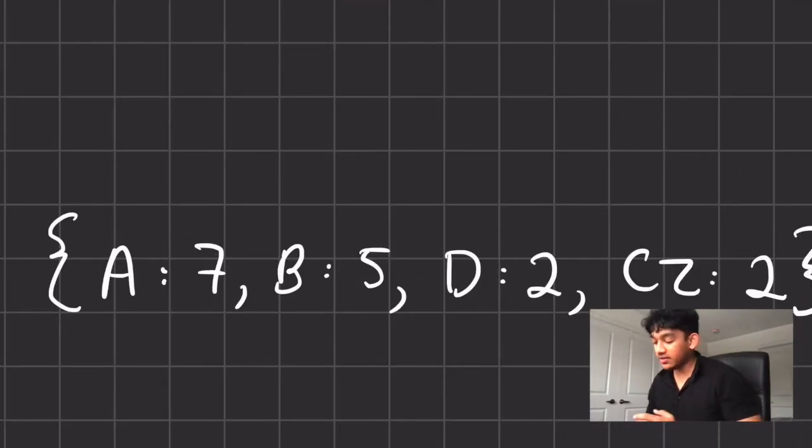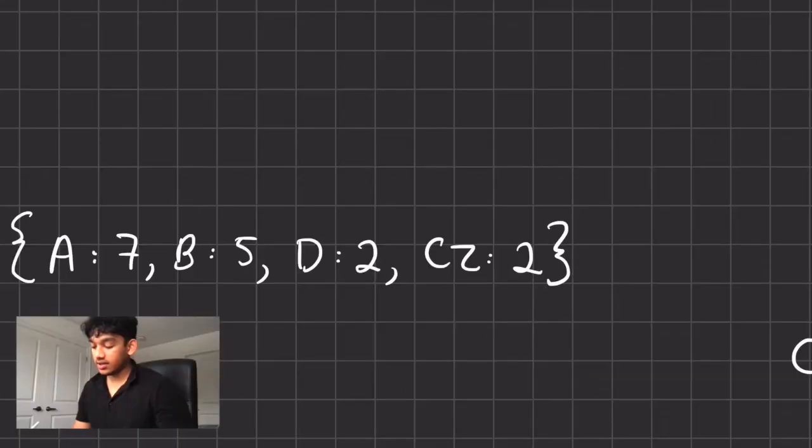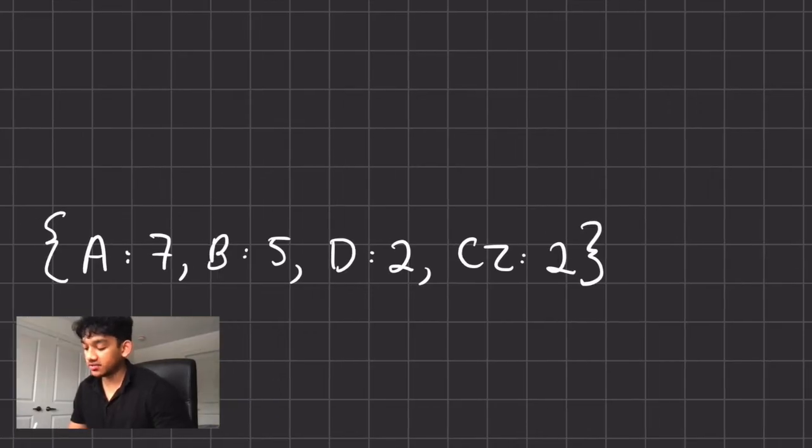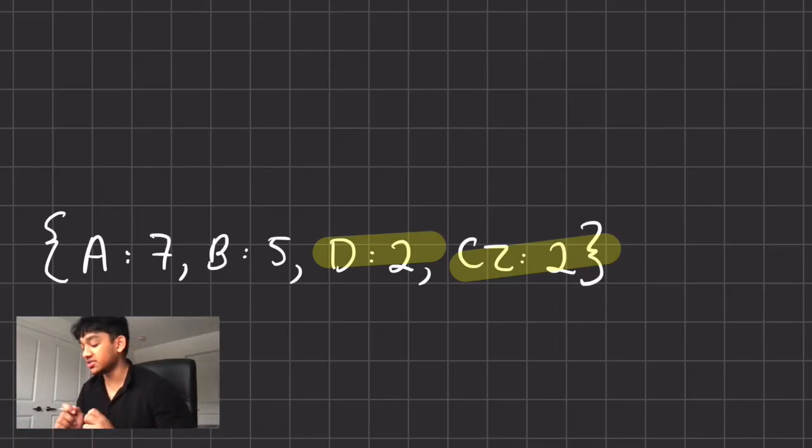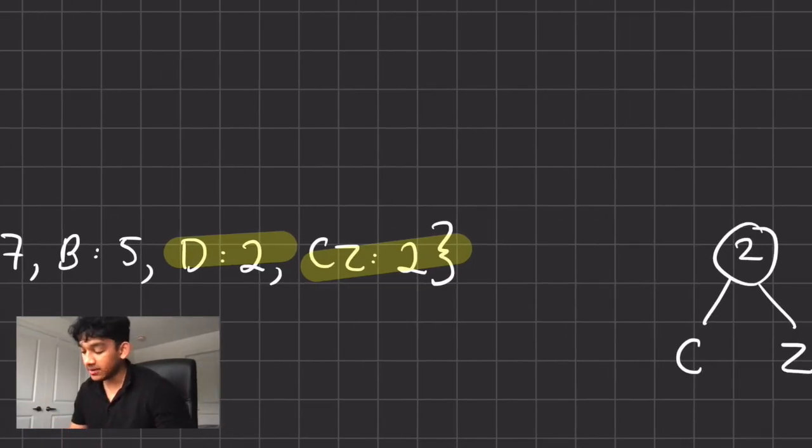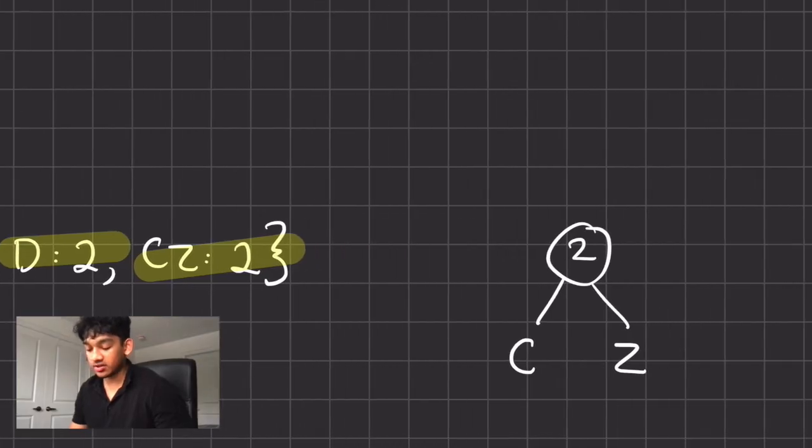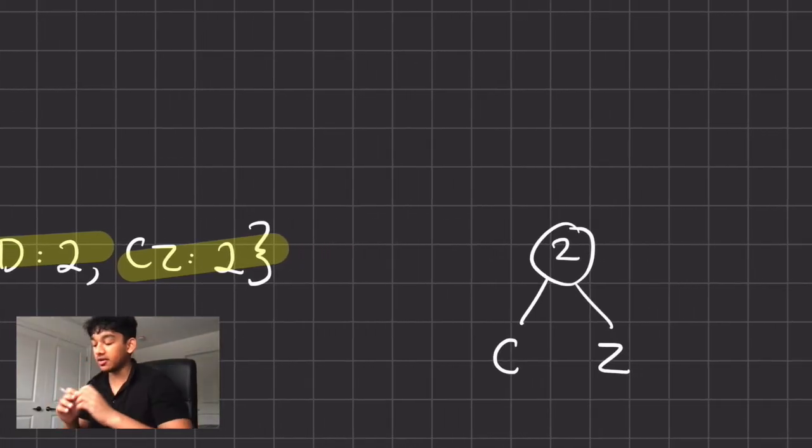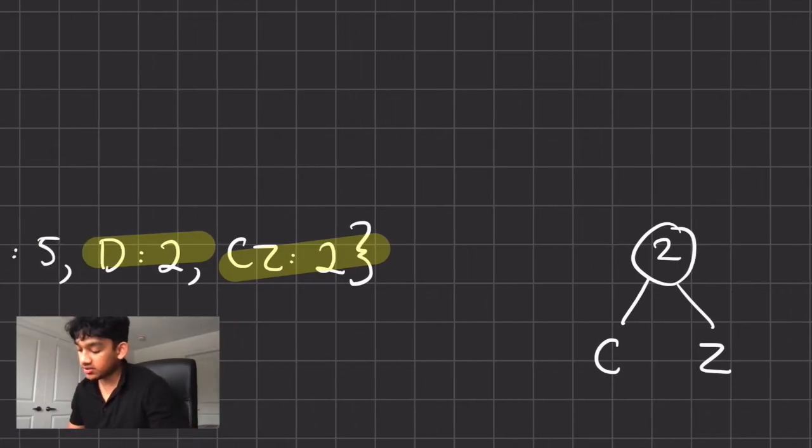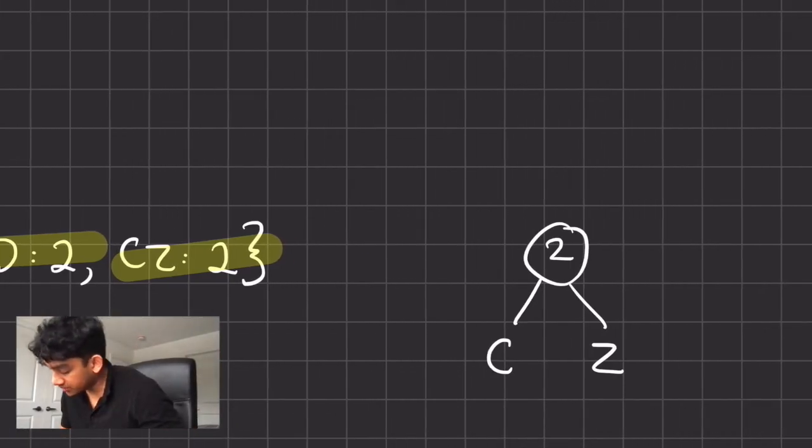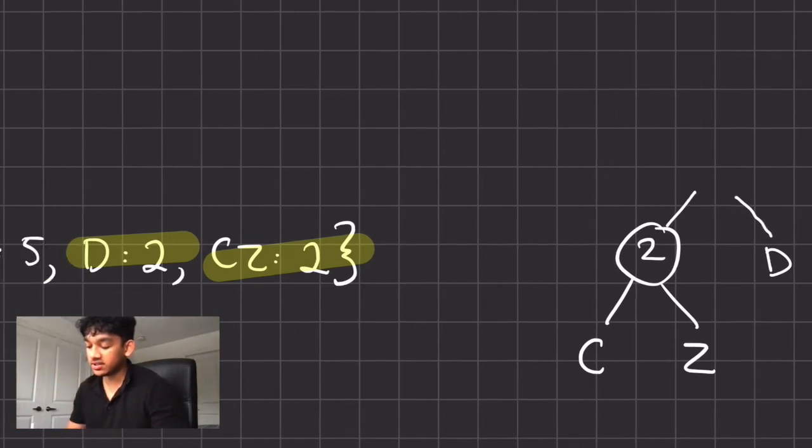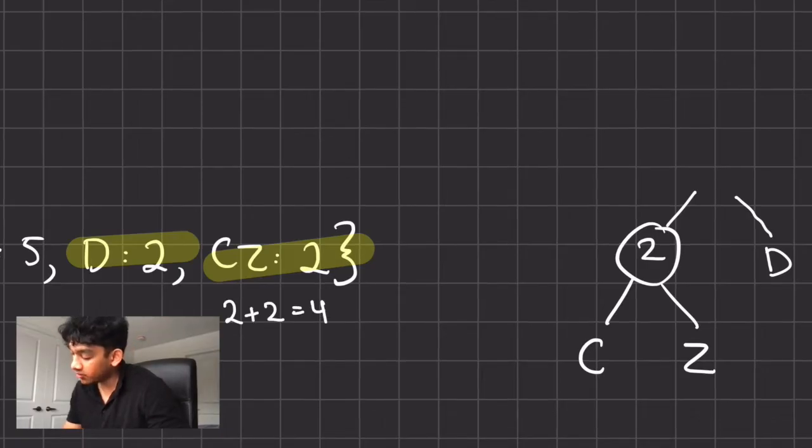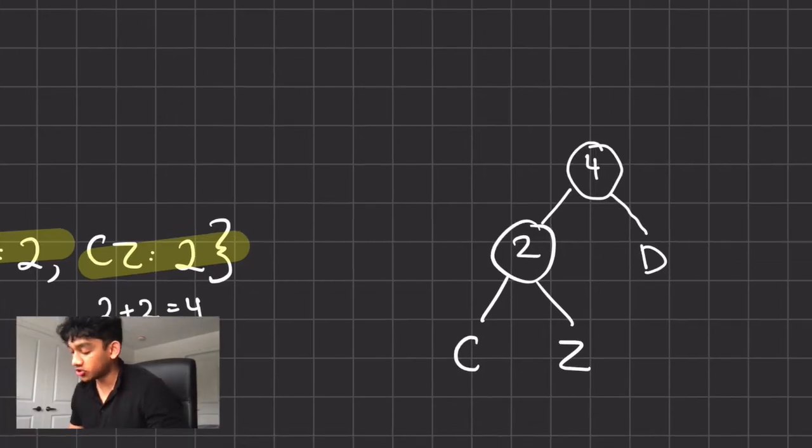Now all of a sudden, we have a new element in the set, which is 2. And we can represent that as CZ. So now we have A7, B5, D2, CZ, 2. D and CZ are the smallest values in this case, because it has a frequency of 2. So what we're gonna do is we're gonna join these and they're gonna be siblings now. So D is gonna be siblings with the node that's apparent for both of these nodes. So D would be here. And now we're gonna have the sum of these two frequencies. So CZ is 2, D is 2, 2 plus 2 is equal to 4. So we're gonna have 4 all the way up here. And this is gonna be our tree for now.